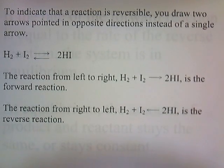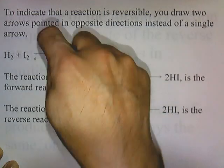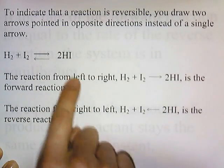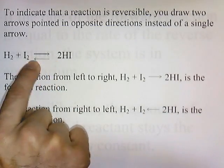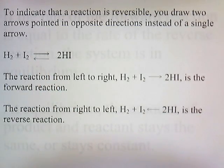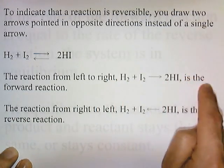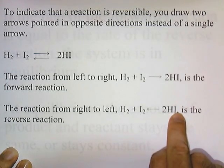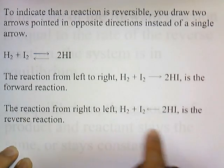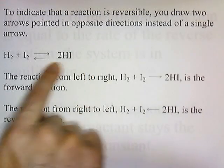To indicate that a reaction is reversible, you draw two arrows pointed in opposite directions instead of a single arrow. So H2 plus I2, the top arrow means it forms 2HI, and then 2HI can react to form H2 and I2 — that's what the bottom arrow pointing the opposite direction means. The reaction from left to right, H2 plus I2 gives 2HI, is the forward reaction. The reaction from right to left, 2HI forms H2 and I2, is the reverse reaction.